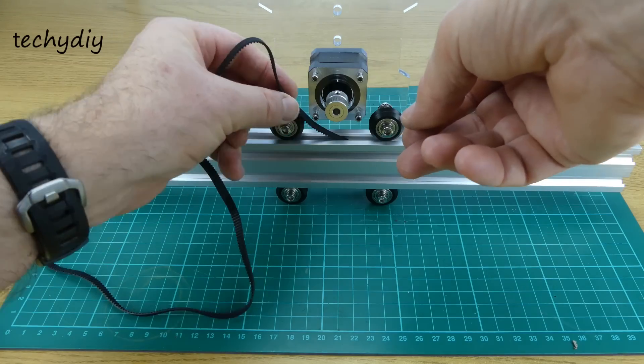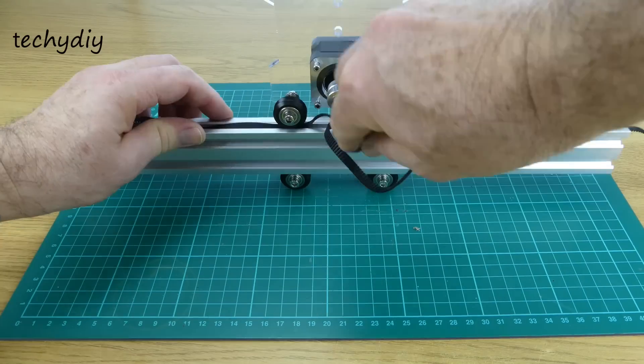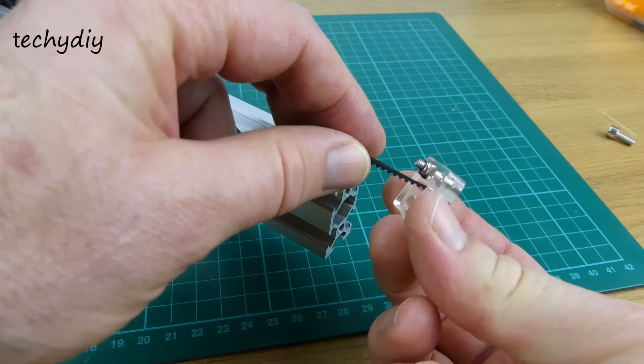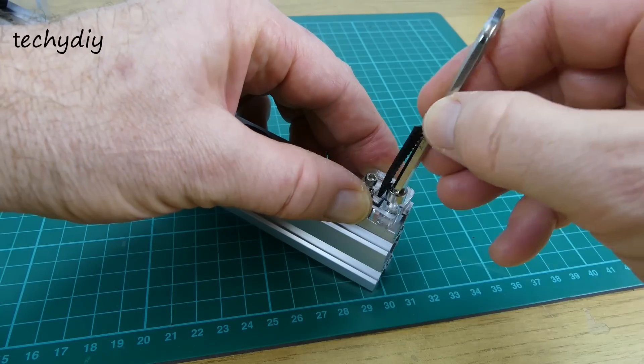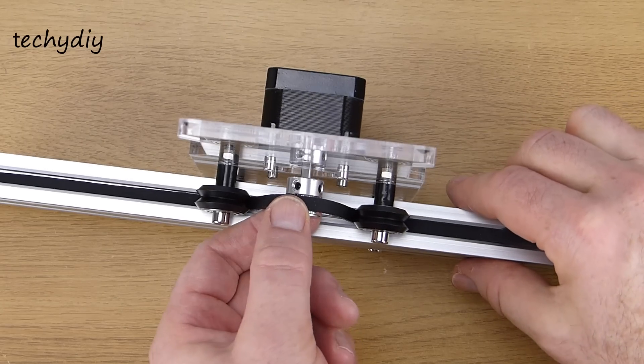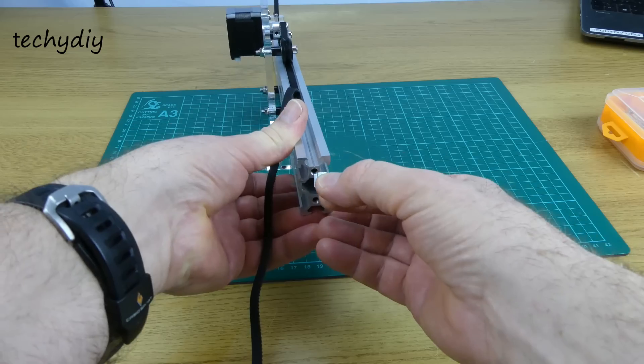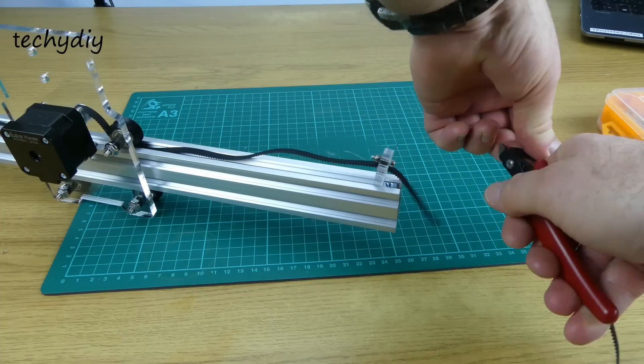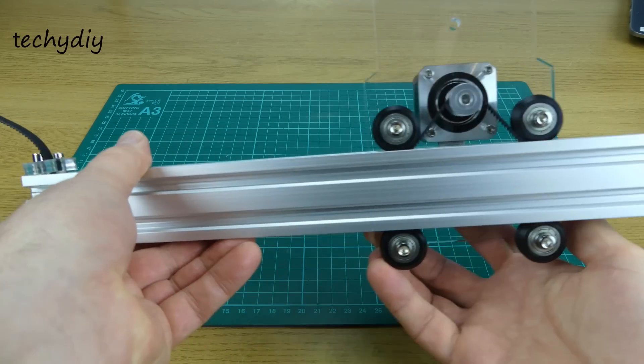The drive belt was installed and secured with one of the belt tensioners. The position of the pulley was adjusted and the belt tightened and secured by a second tensioner. And that whole process was then repeated for the second side.